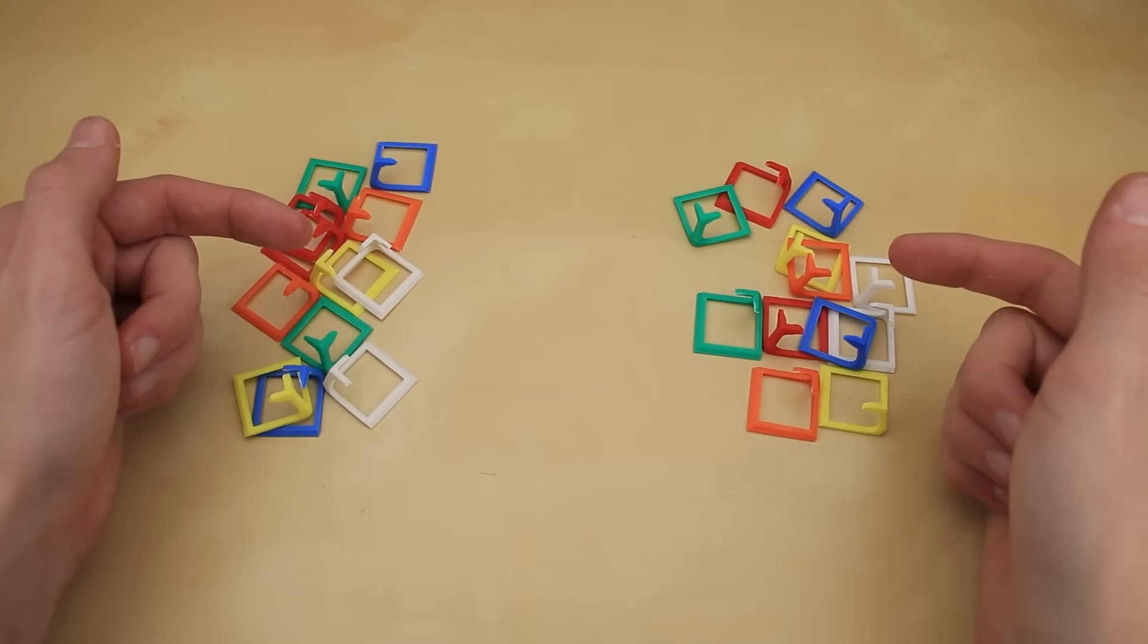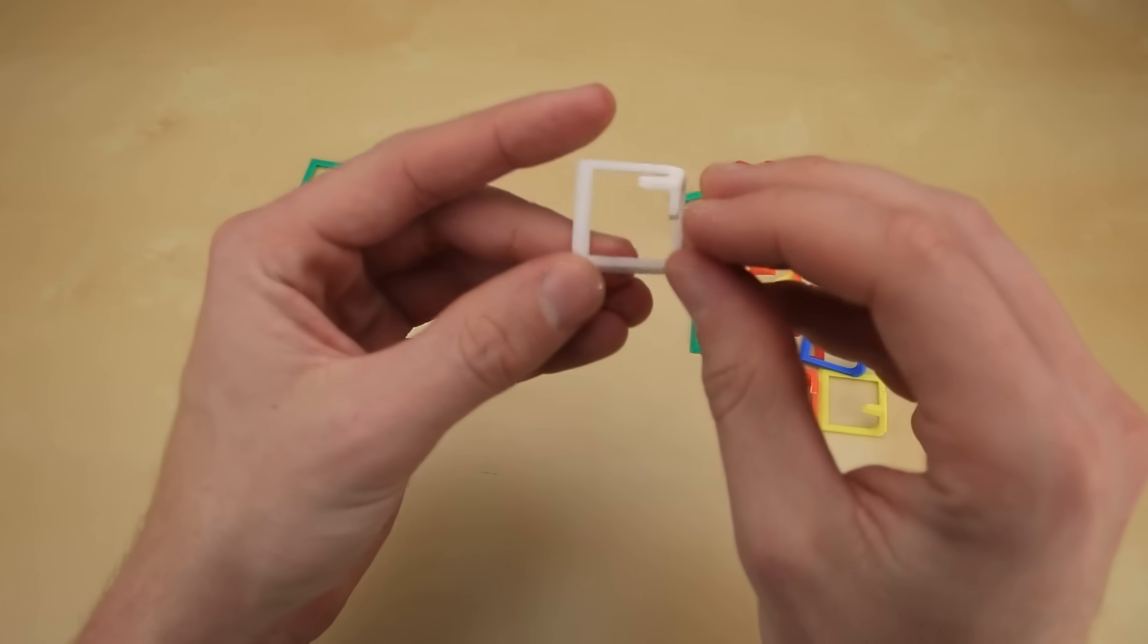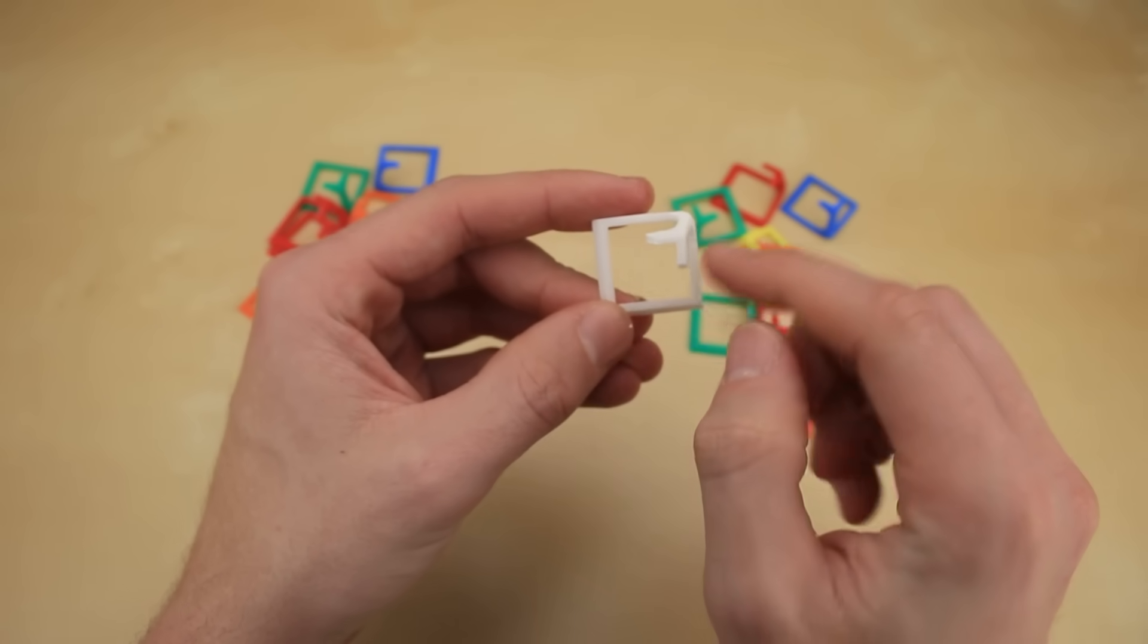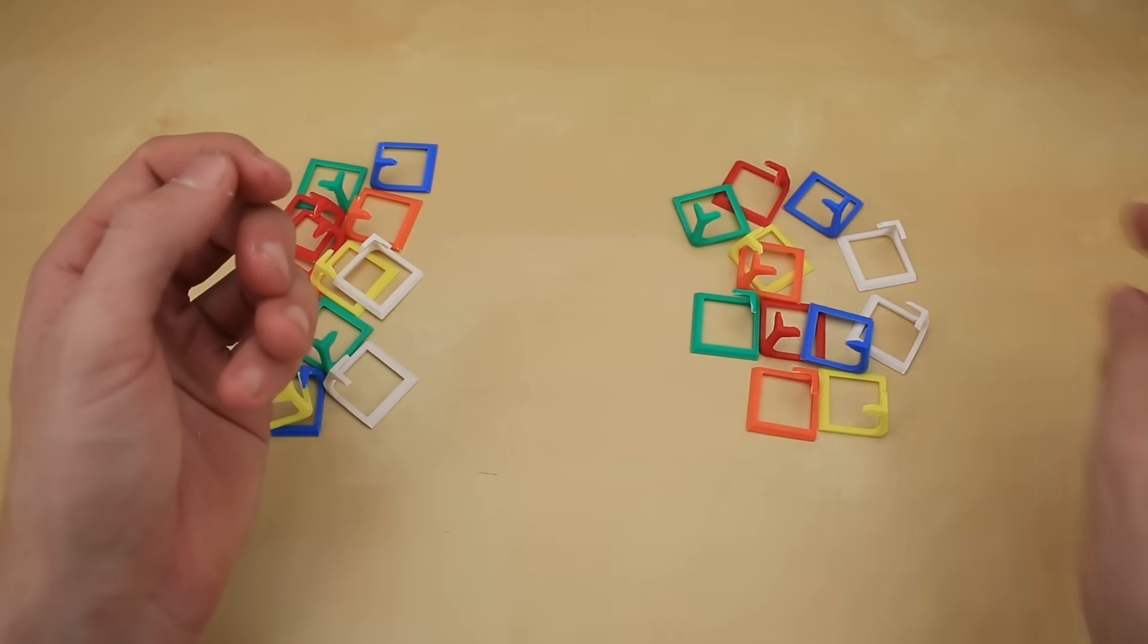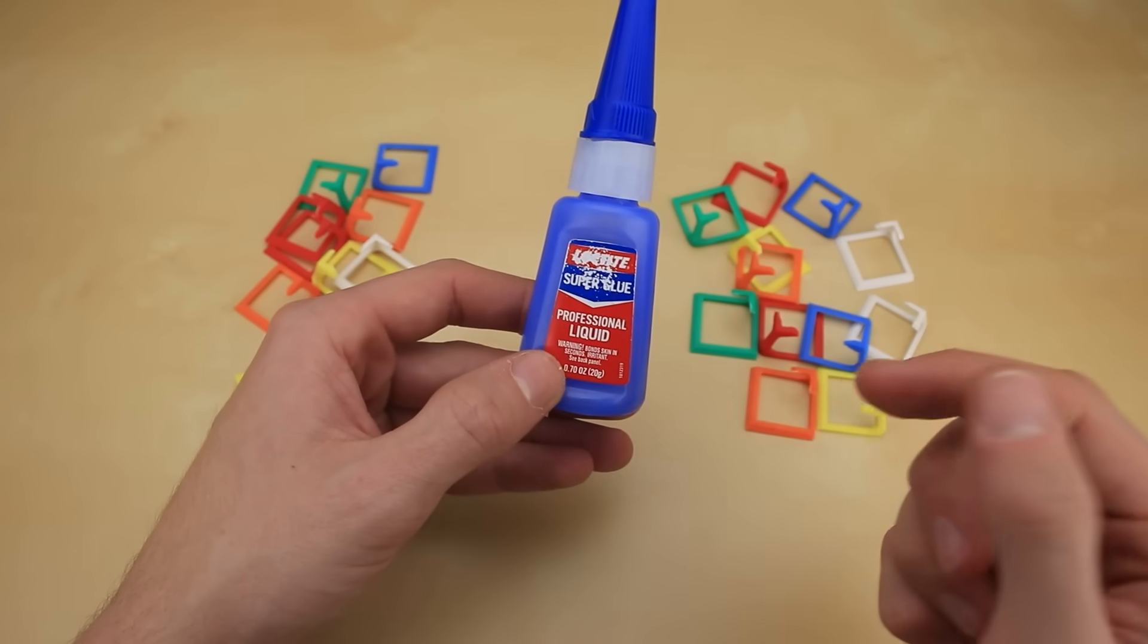All right, so here are all of the cut down pieces. I still have one more spot where I want to remove a bit more extra plastic, but we're going to wait to do that until after the next step, which is breaking out the super glue and gluing the pieces together.